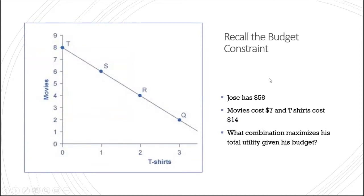Let's put this together with the budget constraint. Jose has $56 and is trying to decide how to allocate his budget between movies and t-shirts. He can go to one movie at $7 or buy one t-shirt at $14. Given his budget, how can Jose allocate his resources — in this case his income — in order to maximize his total utility? That's the ultimate question we're addressing here.